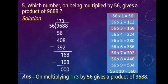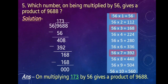Solution: 9688 divided by 56. The first two digits of the dividend are 96. Checking the table of 56, 96 is not in the table, so we take the nearest number less than 96, which is 56. 56 ones are 56, so we write 1 at the quotient place. 96 minus 56 gives 40. Bring down 8, making the number 408. Checking the table, 408 is not in the table of 56.